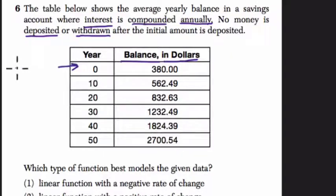So here in year zero, this is our initial account balance. And it's clear that the deposit amount is $380 at that point.